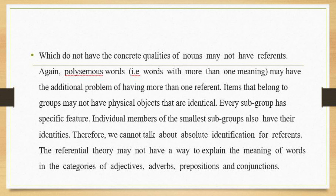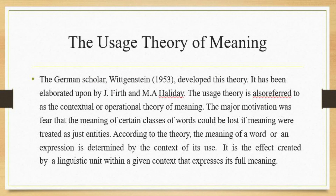Items that belong to a group may not have physical objects that are identical; every subgroup has specific features and individual members also have their own identities. Therefore, we cannot talk about absolute identification of the referent. The referential theory may not have a way to explain the meaning of words in categories such as adjectives, adverbs, prepositions, and conjunctions.